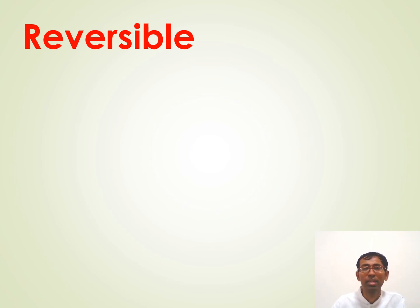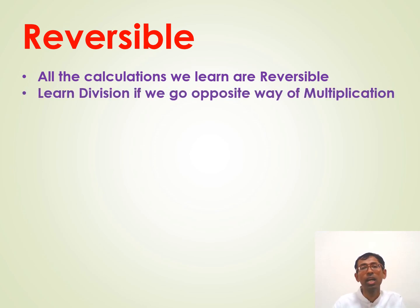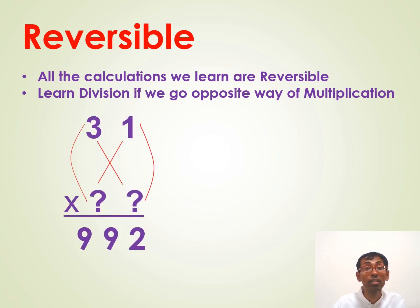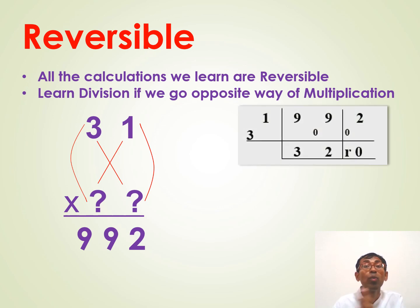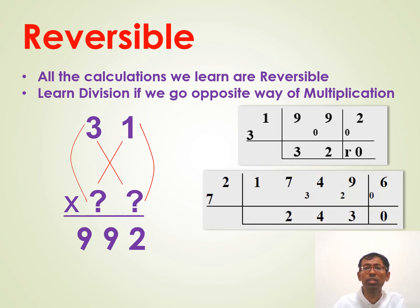The next quality of Vedic Maths is all the calculations that we learn are reversible. If we learn additions, if we reverse the process, we learn subtractions. If we learn multiplications and we reverse the process, we get divisions. We just learned the beautiful vertically and crosswise way of multiplication. If we reverse this process, we can solve all the division problems. There is a beautiful way to arrange the division problems as shown here. This is called crowning gem way of divisions.